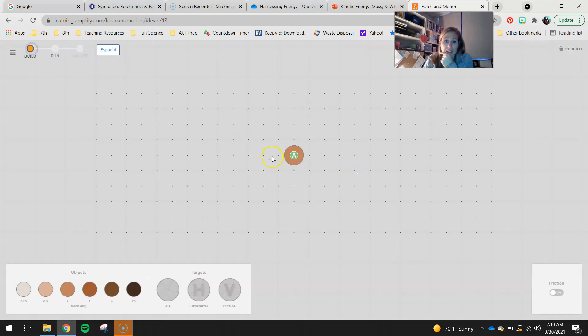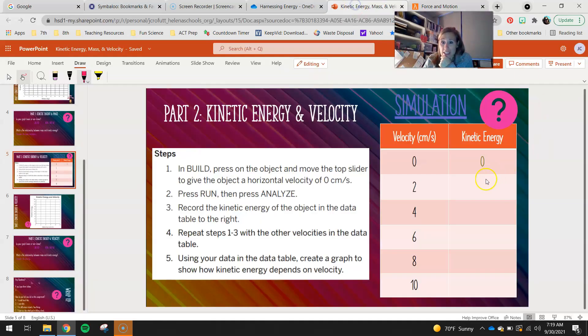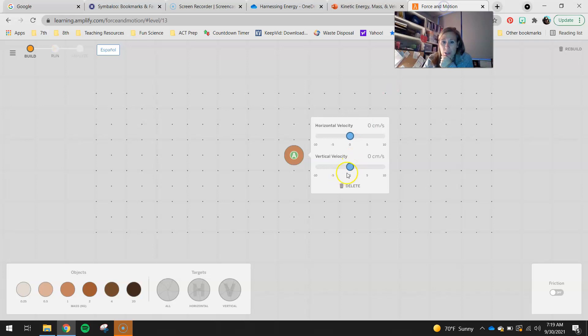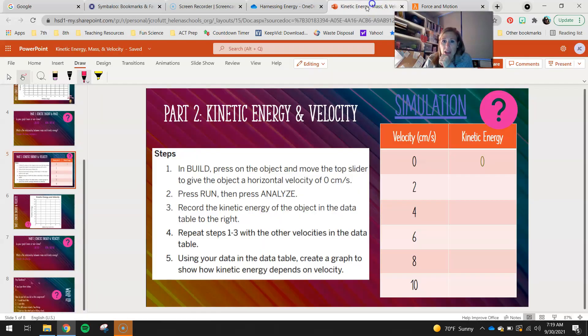So then you guys would go back. You guys would keep the same puck because we don't want to change the mass on it. We just want to change the velocity. So then I can click it. My next velocity it gives me is two. So I would change my horizontal velocity to two. I would click run and then analyze. And then I'm going to collect the kinetic energies of the rest of these remaining data pieces.